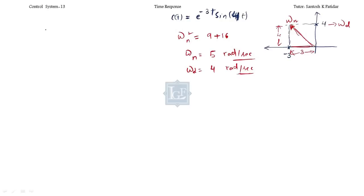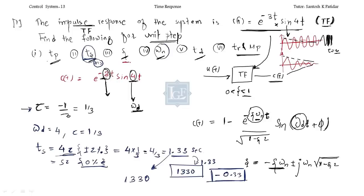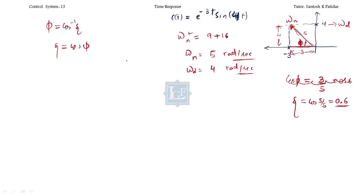Now, what is ζ? We have seen that φ = cos⁻¹(ζ), so ζ = cos(φ). The angle φ is between the two components. For this system, cos(φ) = base/hypotenuse = 3/5 = 0.6. Therefore ζ = 0.6. They asked about ζ also, so this is clear: ζ = 0.6.